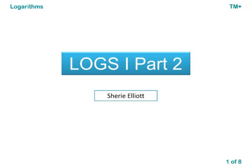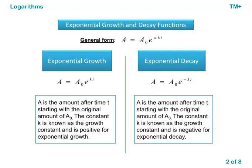This video is the second part of the Logs I section of the Logarithms module. We're looking at exponential growth and decay functions. The general form is a equals a sub-zero e to the plus or minus kt. For exponential growth, k is positive; for exponential decay, k is negative.